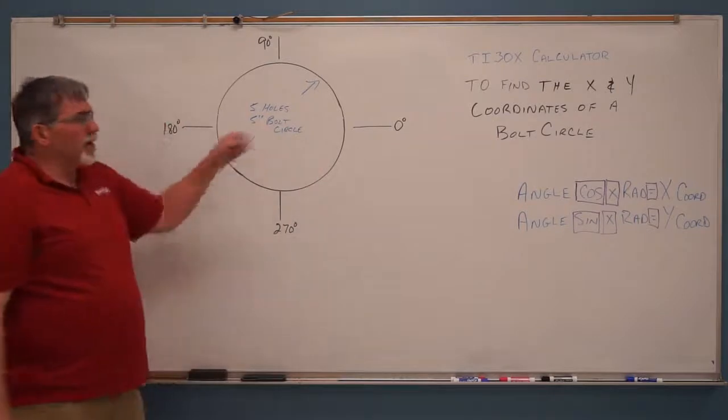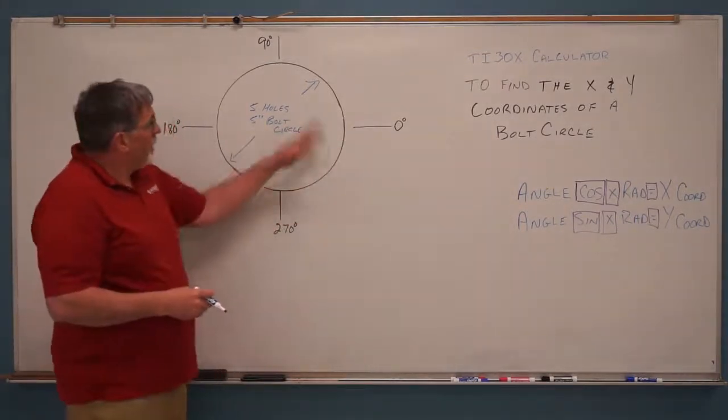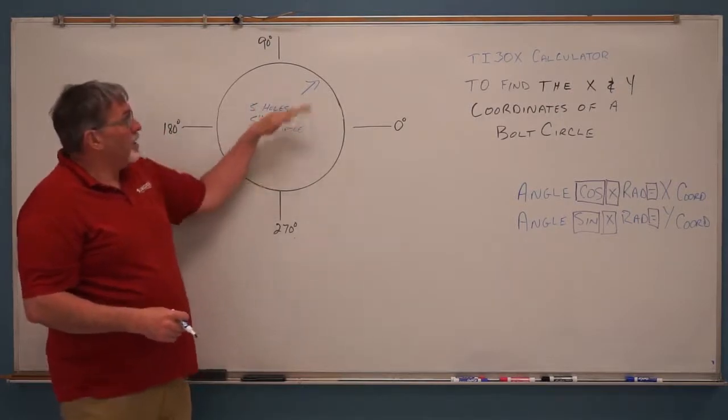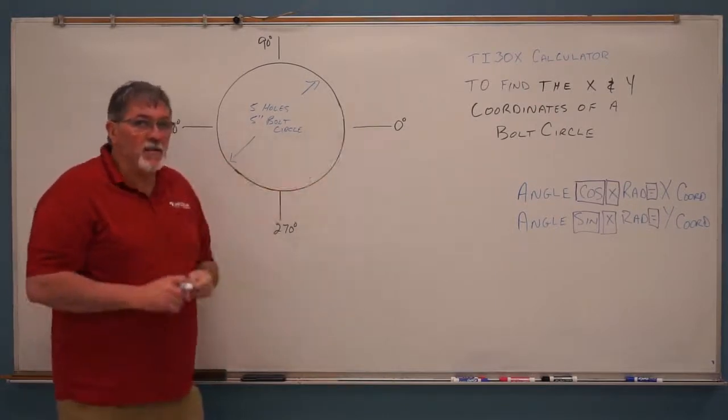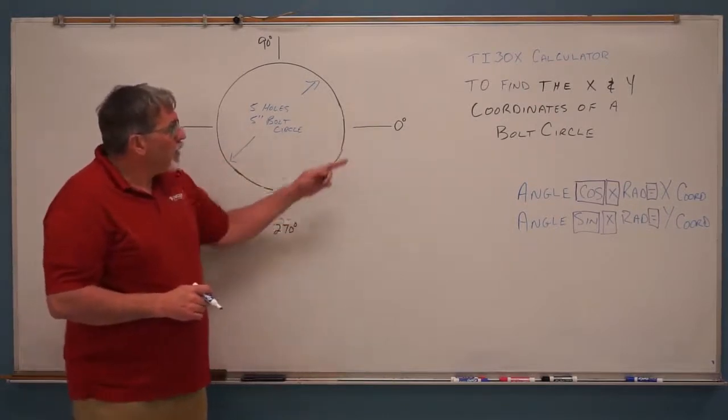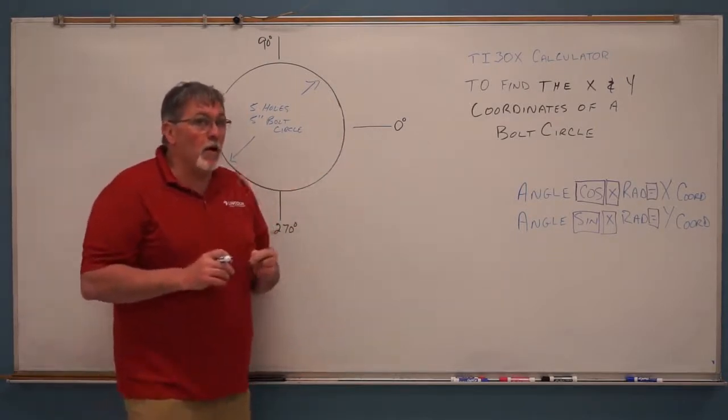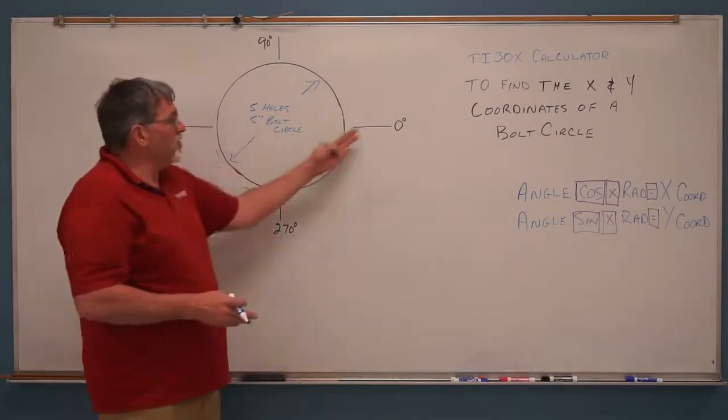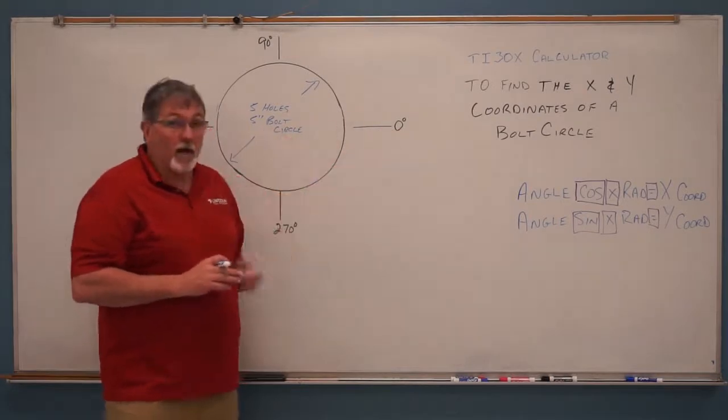So before we can solve this problem, we have to notice a couple things about circles. One is these holes will all be equally spaced. That means they'll have the same angle between each one. We also have to know when we CNC program, we have to have a starting location. And always in CNC programming, even if you're using a polar coordinate method, the zero degree position is at three o'clock.